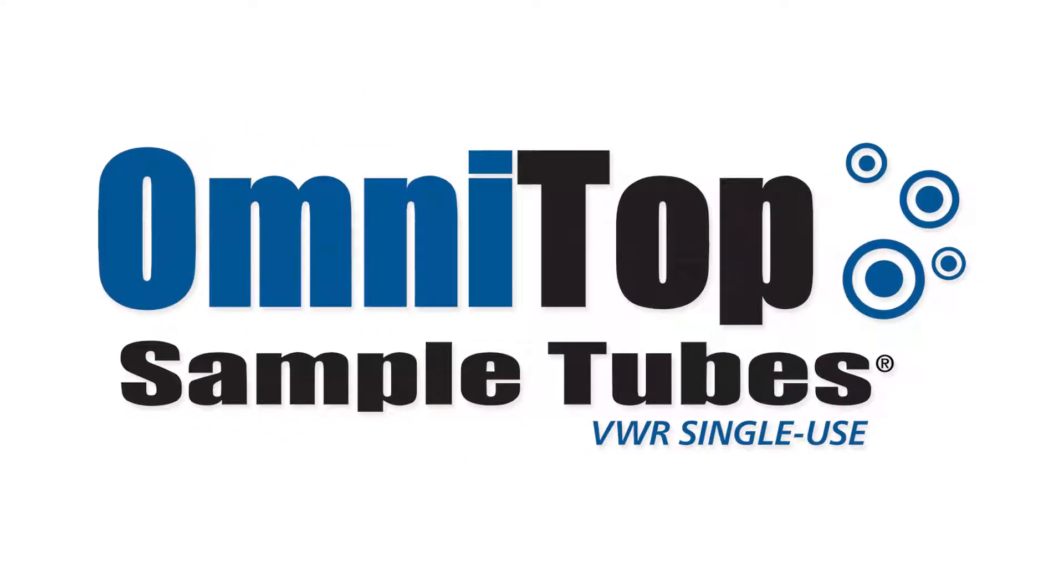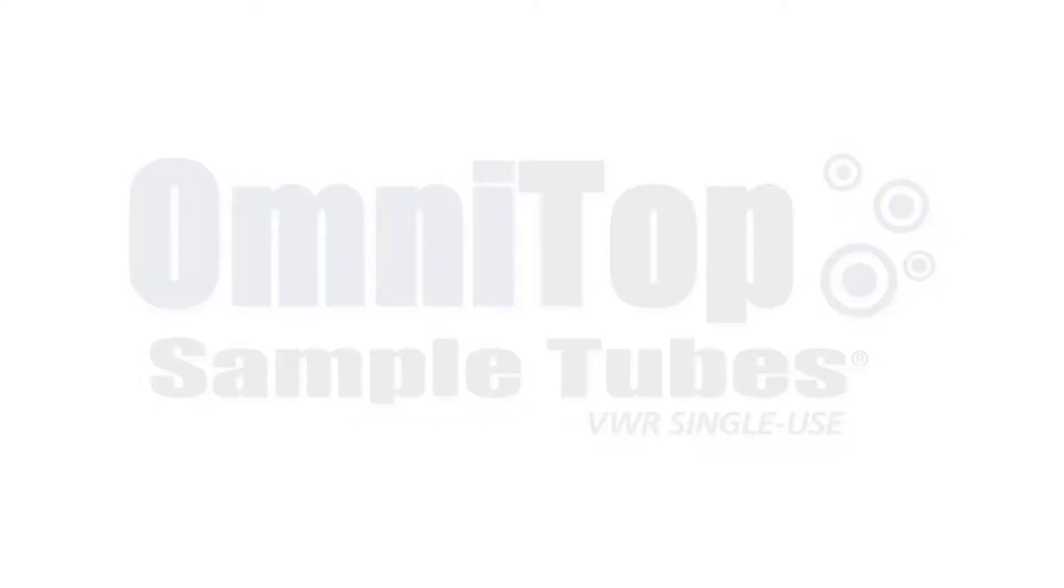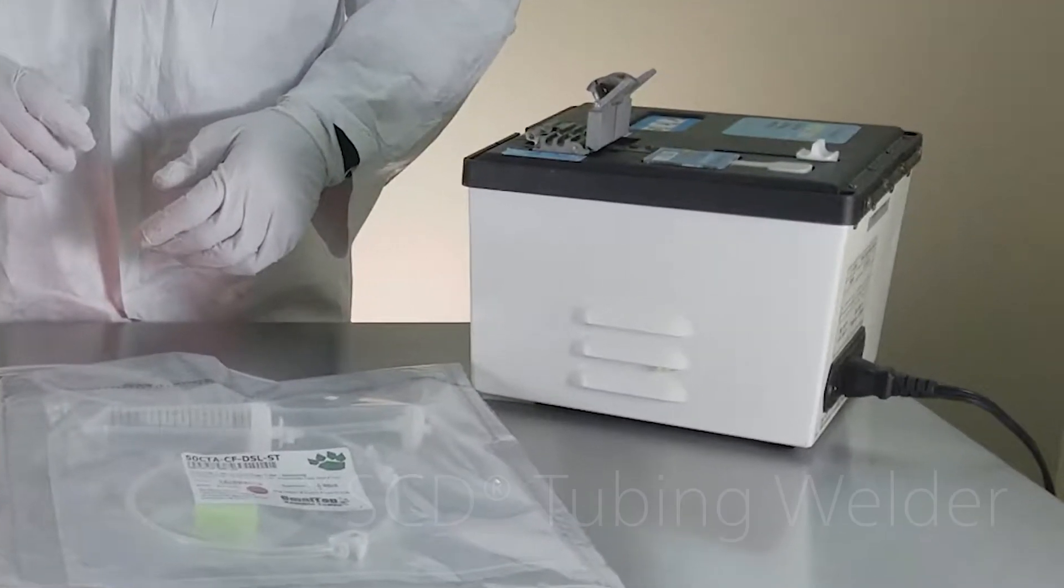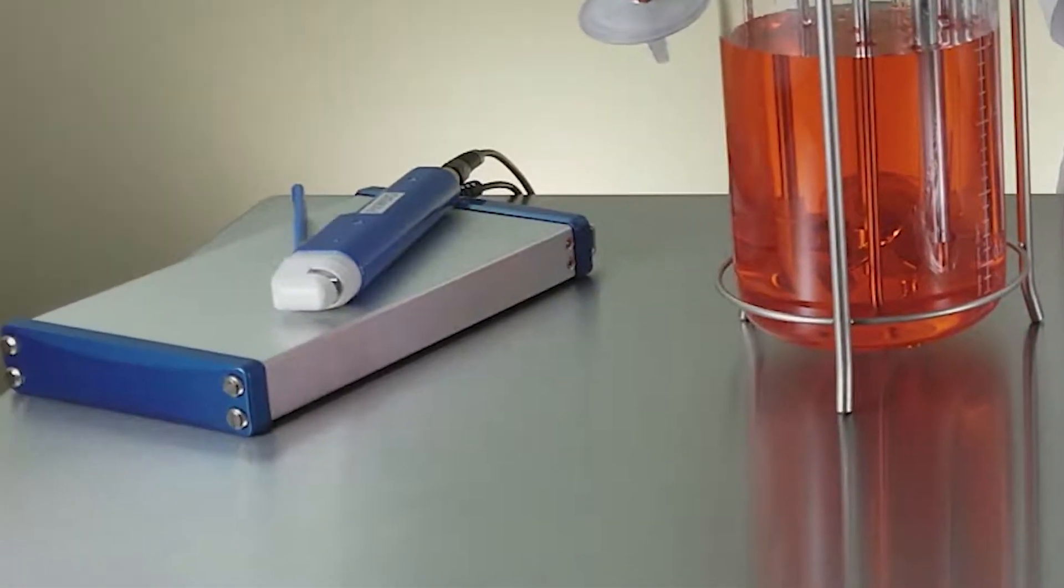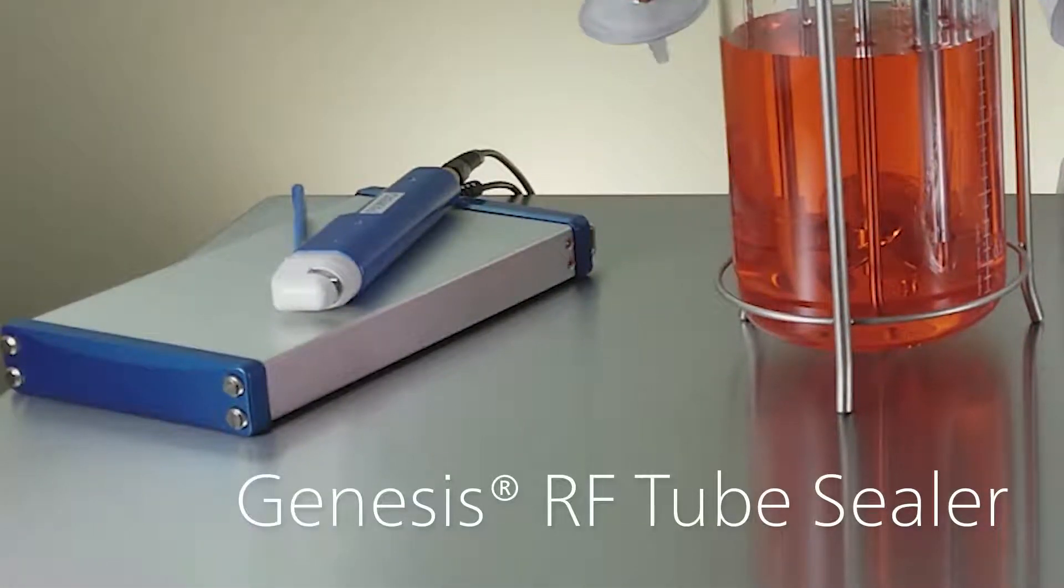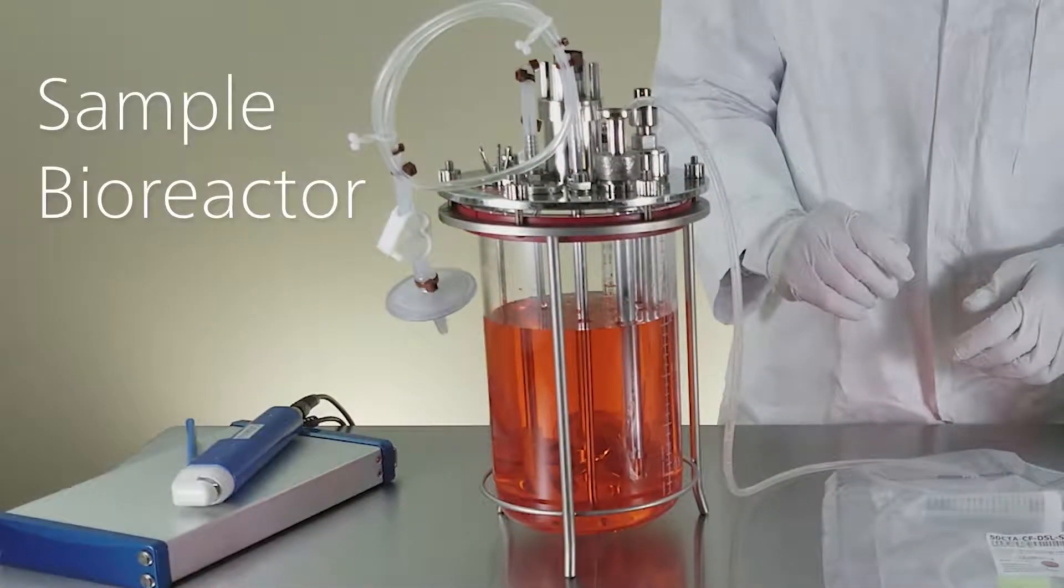Today we're going to show you how to transfer fluid with VWR single-use Omnitop sample tubes. To the right is the SCD tubing welder, on the left the Genesis RF tube sealer, and this is a sample bioreactor.